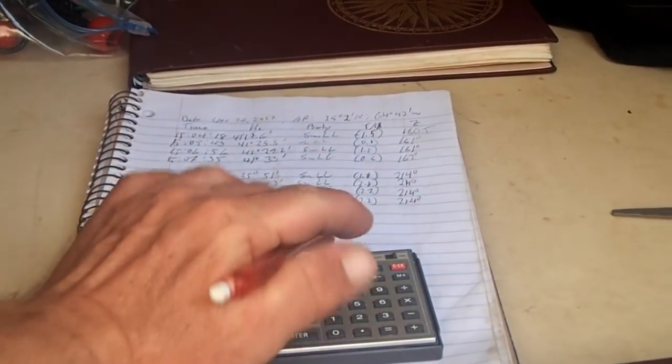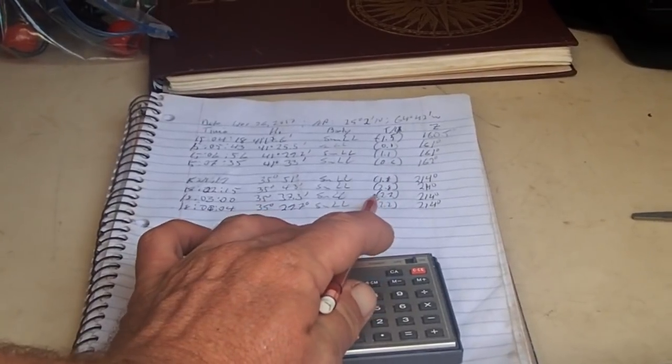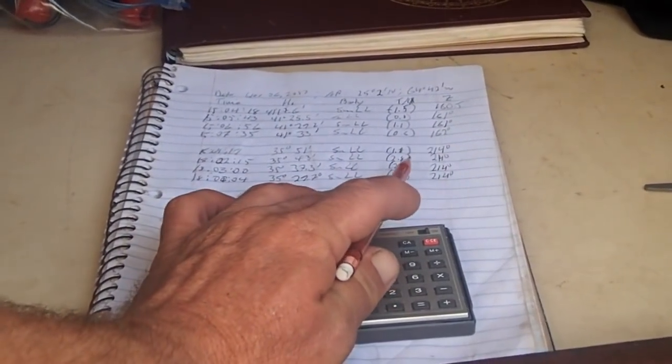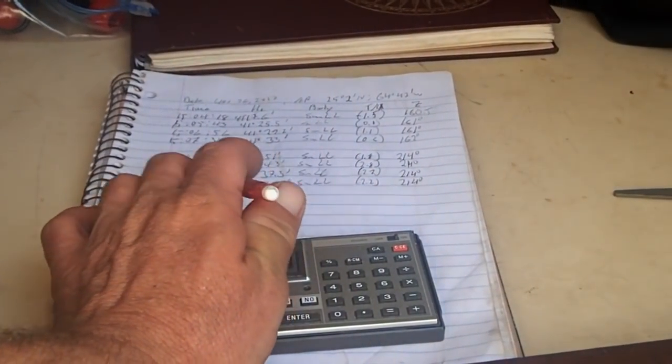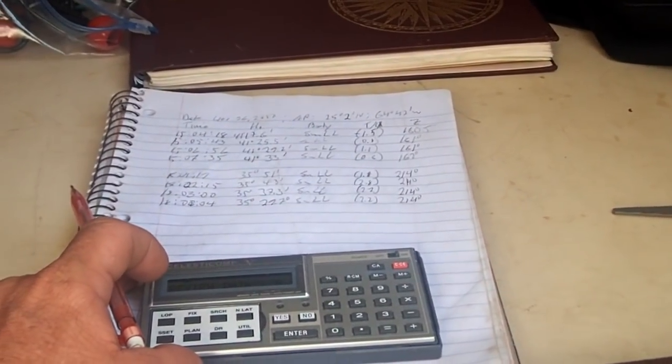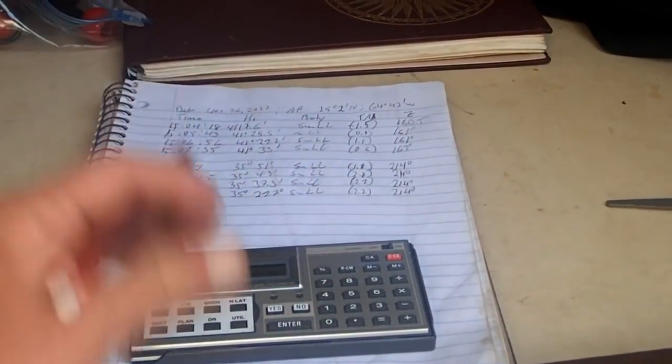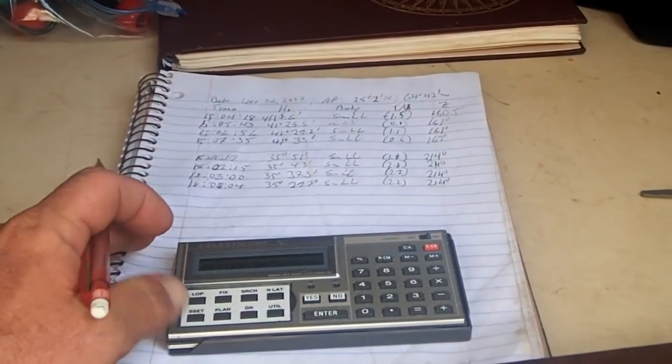Another thing about doing several observations of one body, if you see one of them is way out, like one of them is 20 miles away, and all the other ones are about two miles away, then discard that observation. But only if it's clearly way out, then you probably made a mistake. You've misread your watch, or misread the sextant, or something.